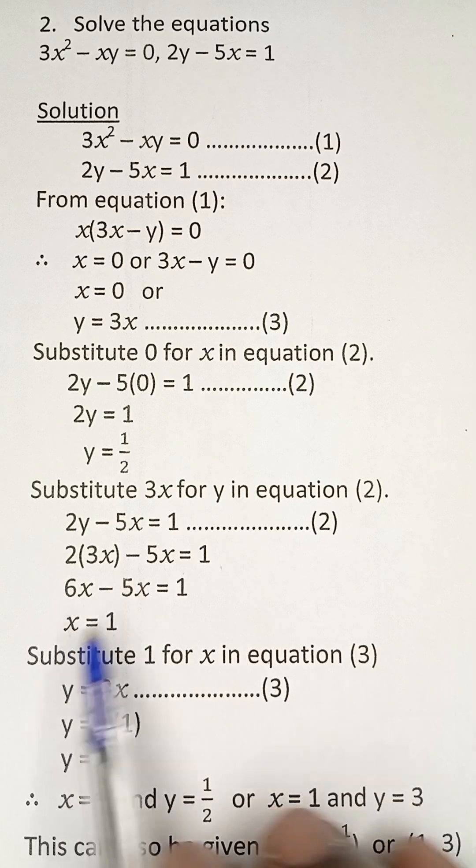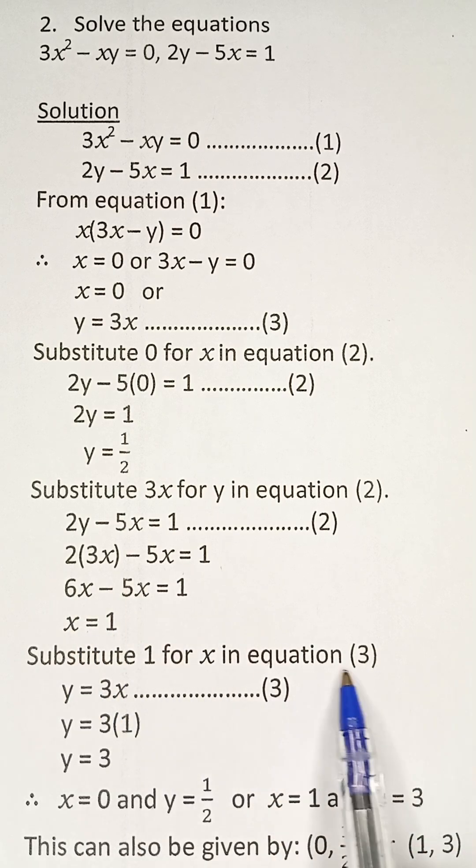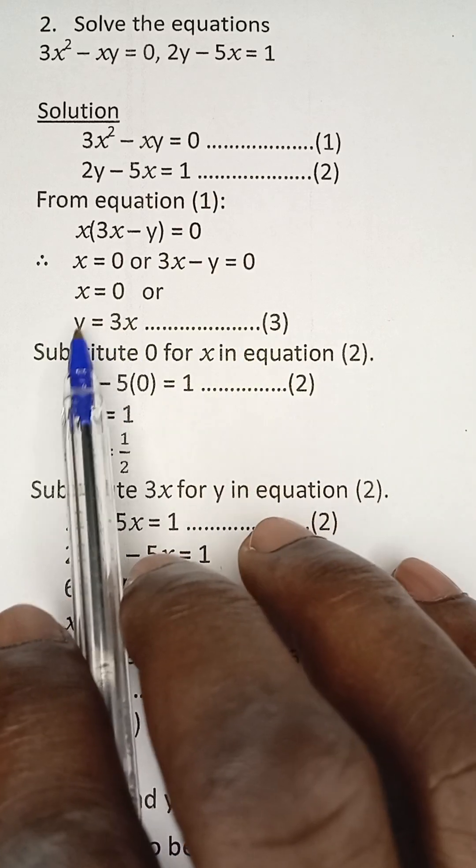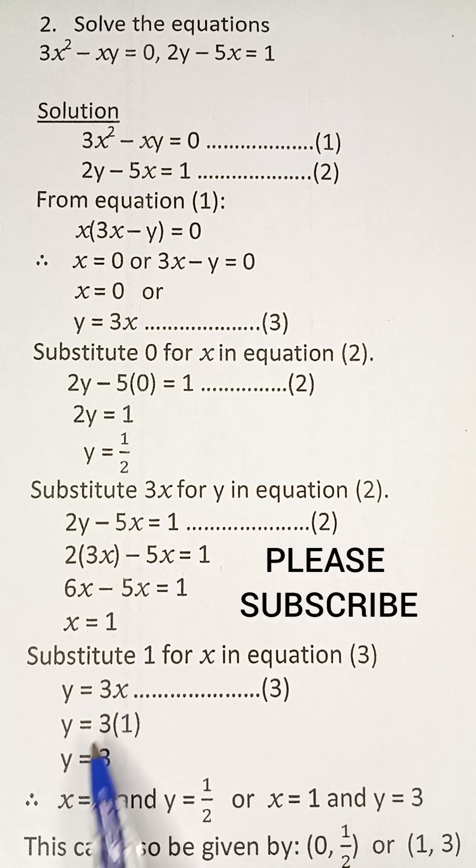Because 6x - 5x is 1, we have x = 1. Now, we can substitute the value of 1 for x in equation 3. Since we have x as 1, we can obtain the value of y now. So we say y = 3x. y = 3(1) because x is 1, and that gives us y = 3.